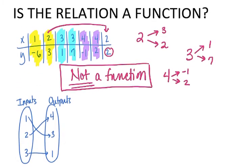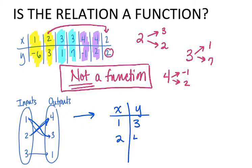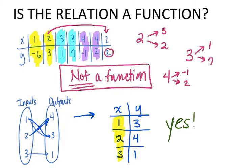Next is a mapping diagram. You can turn this into an input-output table: input 1 matches with output 3, input 2 matches with 4, and input 3 pairs with 1. None of our inputs repeat, so we don't have the same problem as before. This relation is a function.